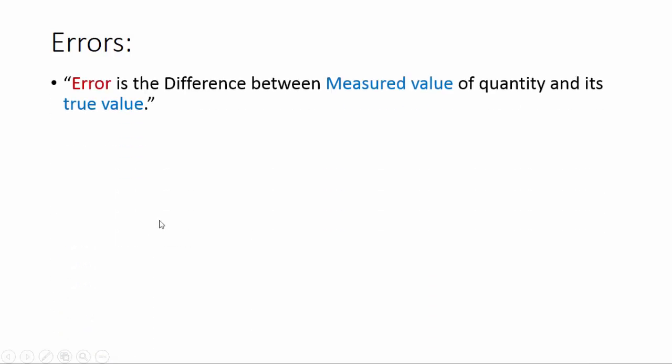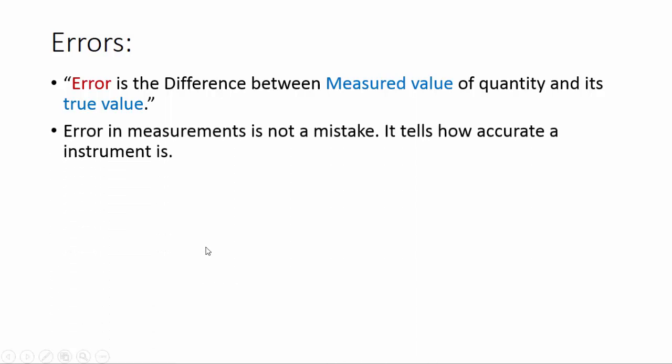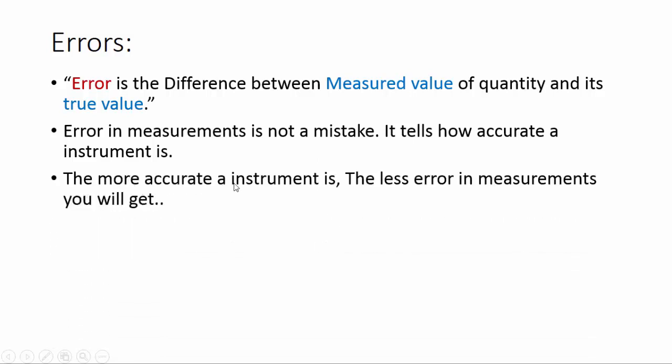Error is the difference between measured value of quantity and its true value. It's not a mistake. Error in measurements is not a mistake. It tells how accurate an instrument is. The more accurate an instrument is, the less error in measurements you will get.